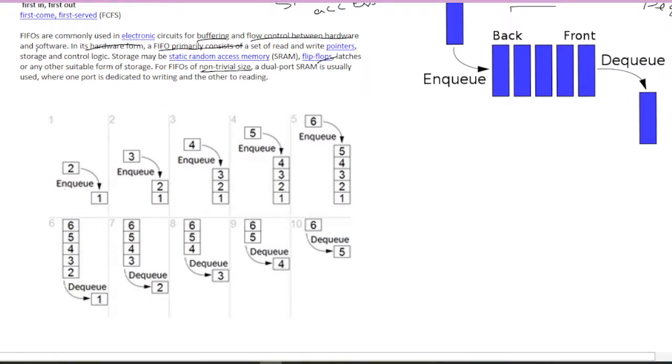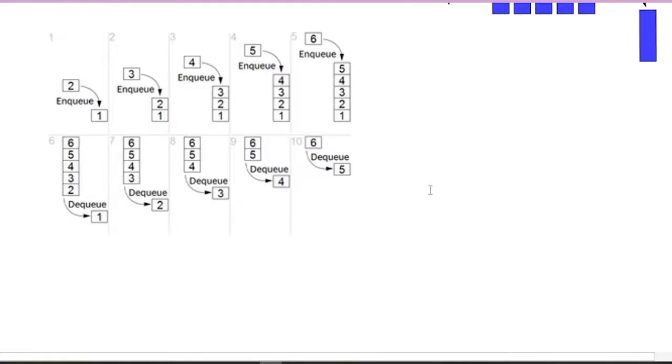Here there is one element and we are adding another, adding another, that is enqueuing. In stack it was taking the last one, but in queue it is taking first one out, then second, third, like that. Its operation is from both sides, and in stack operation is from only one side, only one dimension.